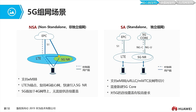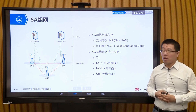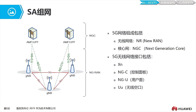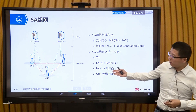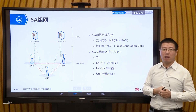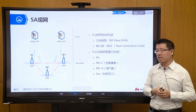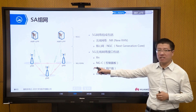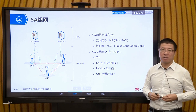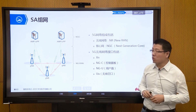This is our expanded SA standalone networking architecture. The 5G network has two parts, similar to 4G. The base stations below are called gNodeB — its original name is ng-eNodeB, meaning next generation node B. The 5G base station connects through the IP transmission network to our 5G core network, which we call NGC, or next generation core.